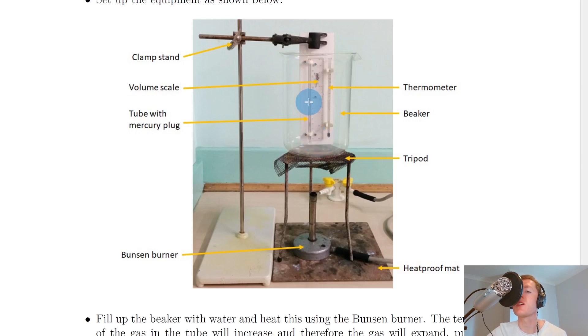The tube contains our column of air. The air is the gas we're going to be talking about. The little mercury plug can move up and down inside our column of air whenever the air expands or contracts. We've then got a tripod holding a large beaker, a heatproof mat and a Bunsen burner underneath to heat water inside the beaker.